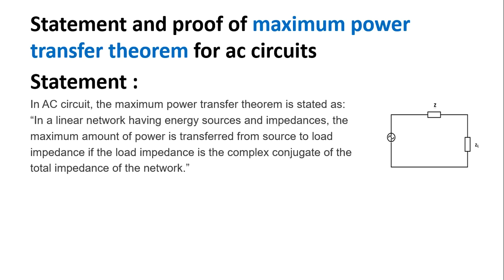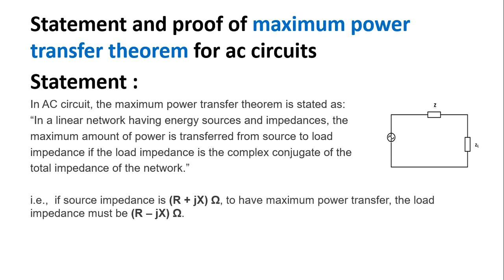Here is the statement of maximum power transfer theorem. In an AC circuit, the maximum power transfer theorem states: In a linear network having energy sources and impedances, the maximum amount of power is transferred from source to load impedance if the load impedance is the complex conjugate of the total impedance of the network. That is, if source impedance is R plus Jx ohm, to have maximum power transfer, the load impedance must be R minus Jx ohm, which is the complex conjugate.